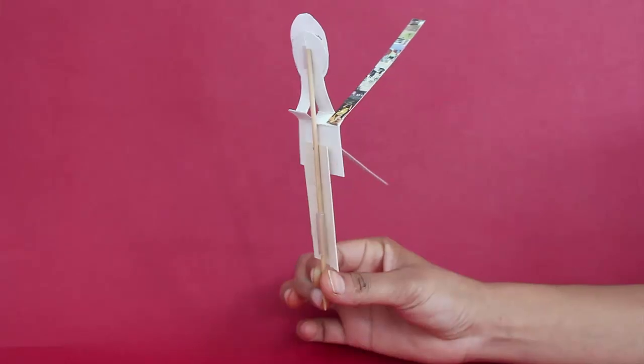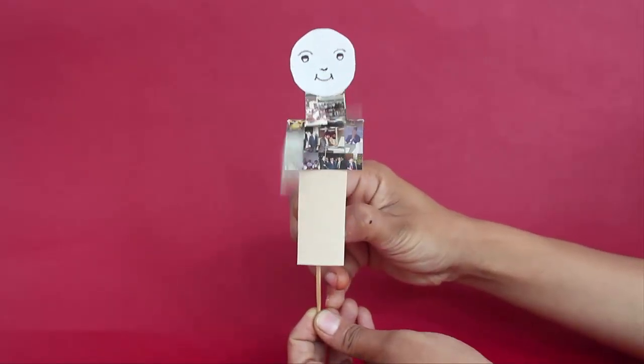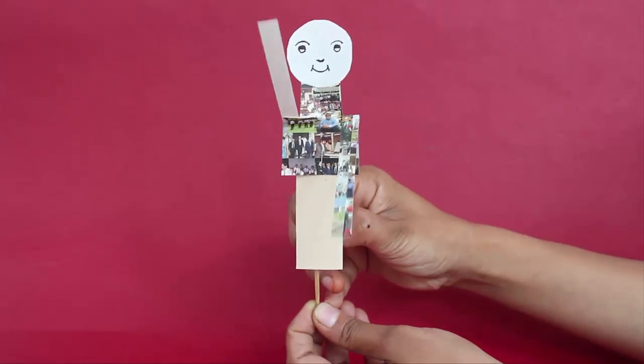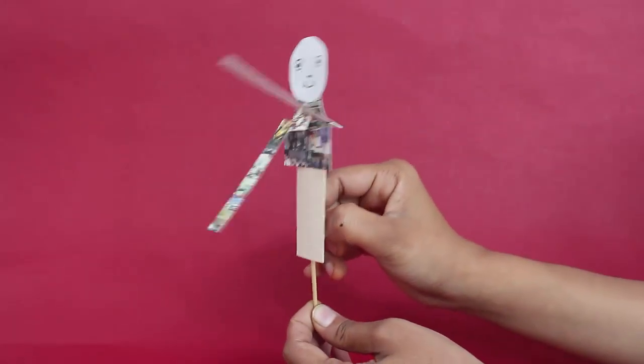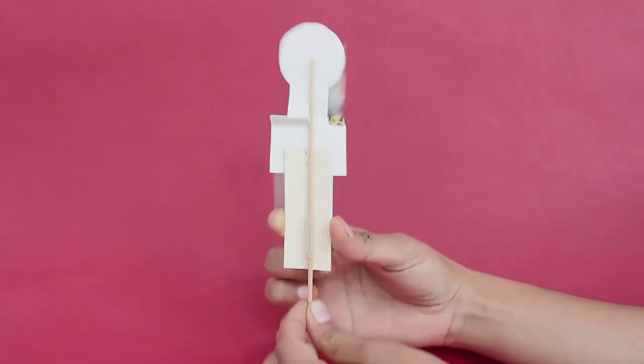Over here you can see there is a refill in which a stick can move freely. And as you hold on to the refill and move the stick up and down, this puppet flagellates its hands, moves them up and down.